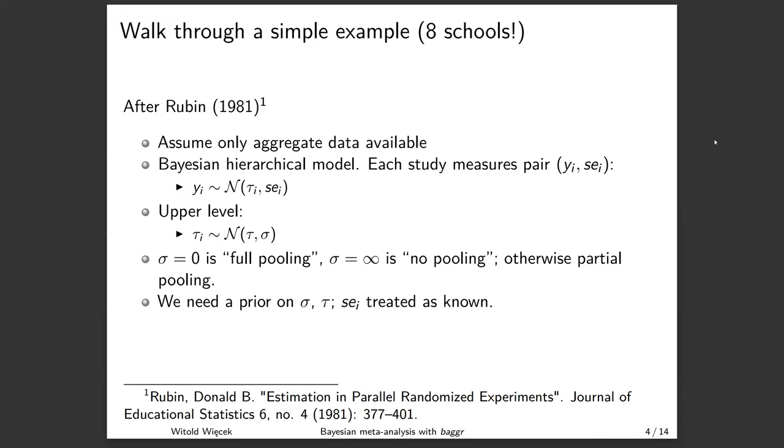And then at the upper level, the true effects, tau_i's, may come from a common distribution. How they relate to each other is regulated through a sigma parameter, heterogeneity. So sigma equals zero, Bayesians would call full pooling. That is the fixed effects case of meta-analysis. Sigma equals infinity means no pooling. That's no meta-analysis, no borrowing of information across studies. And anything in between is partial pooling or random effects.